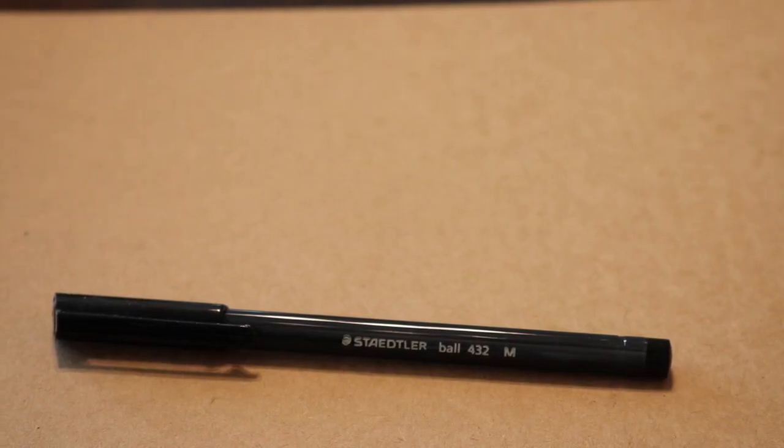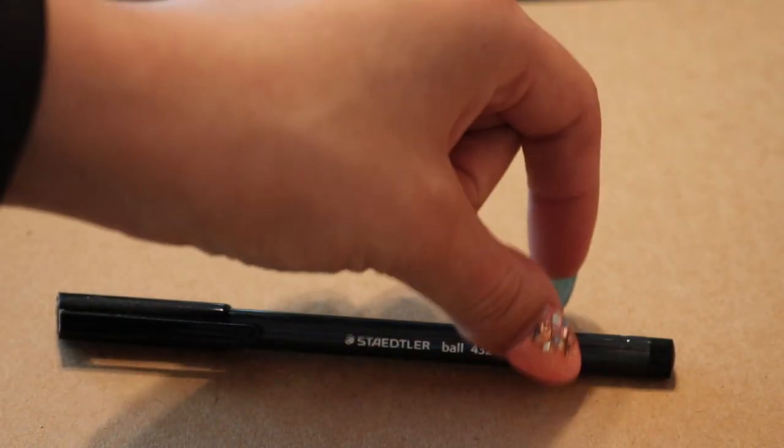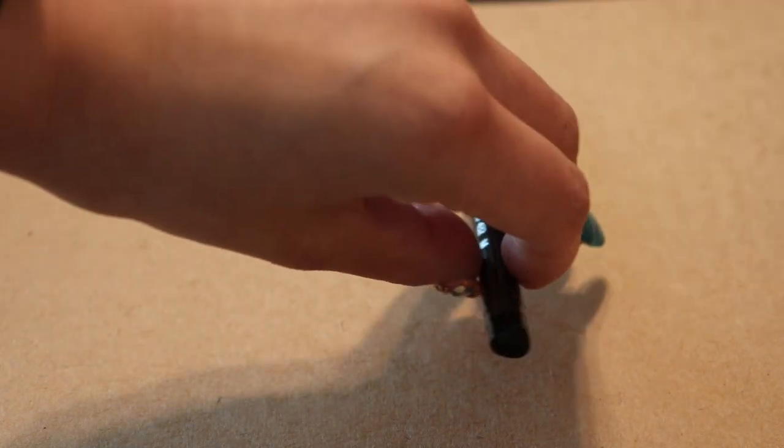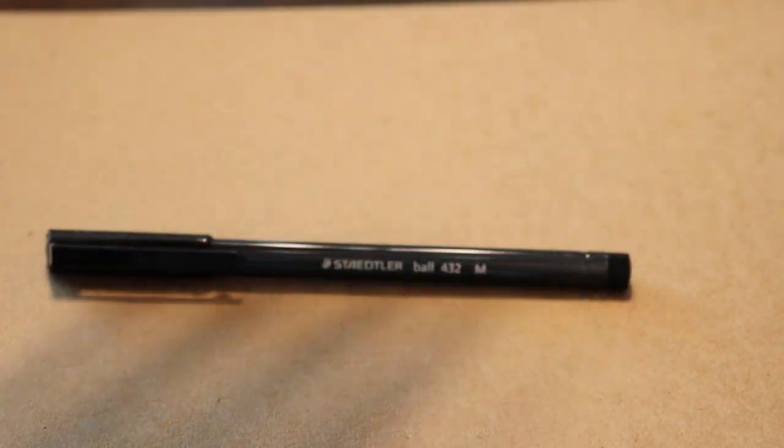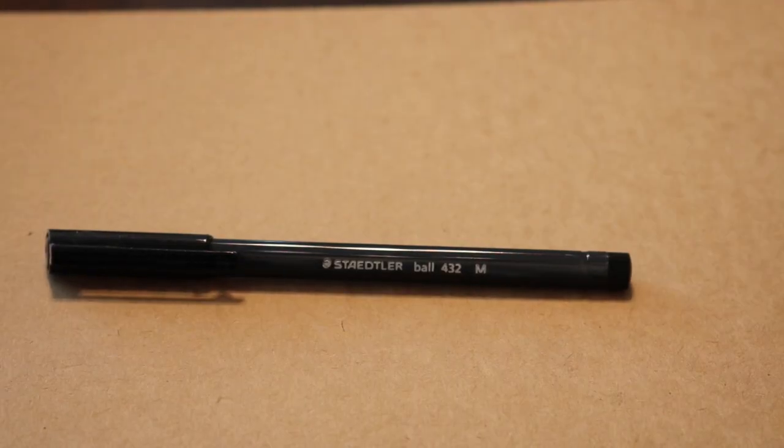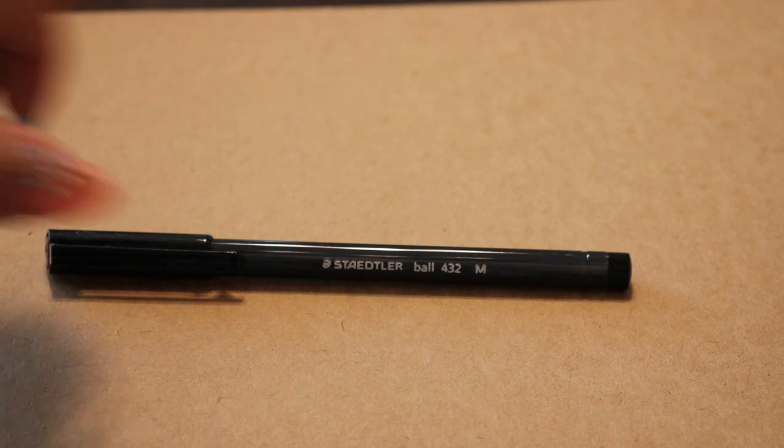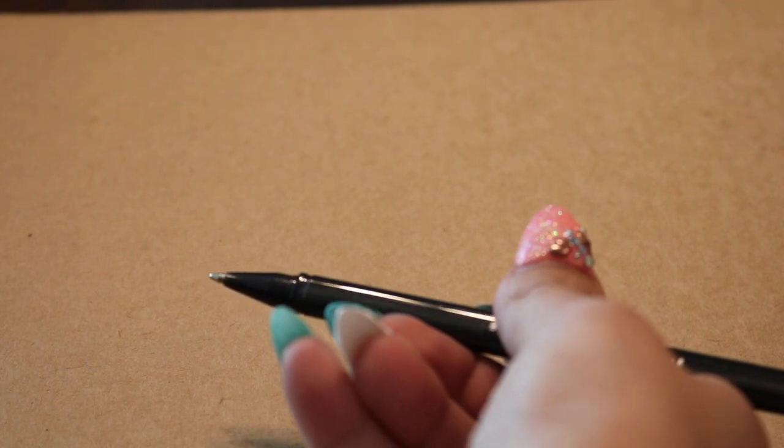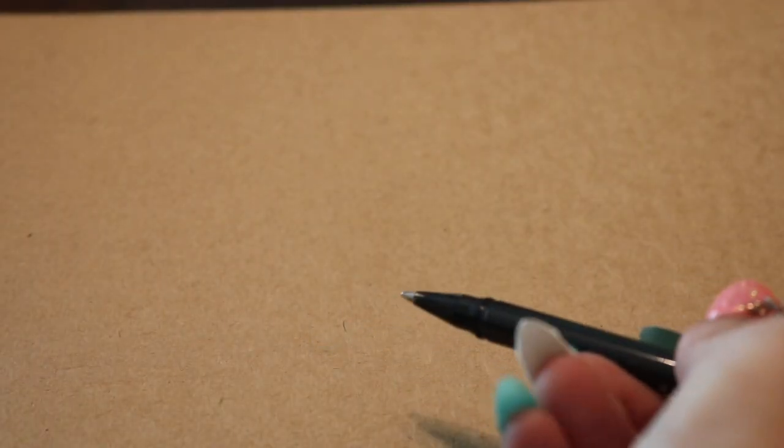As you can see, they are a triangular barrel. So that is a very ergonomic shape for a pen. On it, it just says the brand name and that they're the Ballpoint 432 Pens Medium. So when you open it, there's not much of a grip on here. It's just a medium-sized tip. It doesn't look like it has a cap, but I think the cap is inside the pen.